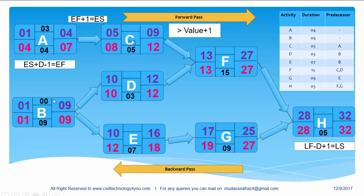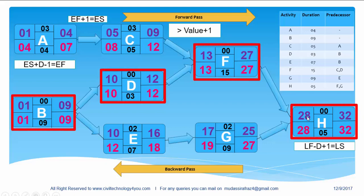Now look closely — some of the activities have zero float, like B activity has zero float, D, F, and H. So these activities are called critical activities. We cannot delay these activities; if we delay them it will affect the whole project duration. Here, if we add the duration of these critical activities it will make the whole project duration: 9 plus 3 plus 15 plus 5 equals 32. So that is the whole project duration. You can see how critical activities affect the project.